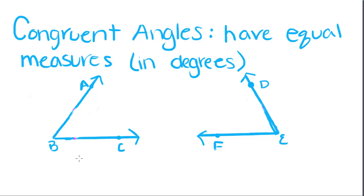Okay, so we're going to start off with congruent angles. Congruent angles are just angles that have equal measures, and we measure angles in degrees.